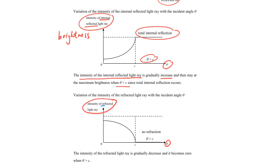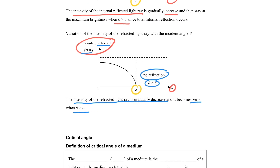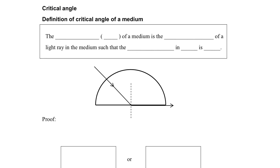Comparatively, the graph below is about the refracted ray — the ray that should be able to go out to the less dense medium. You can see that this time the intensity keeps on decreasing, meaning it becomes less bright. And after particular point C, when theta is larger than C, there is no more refraction. So by comparing these two graphs, we see there is a very special point C — it is the moment we just begin to observe total internal reflection, and also the moment that refraction completely disappears.